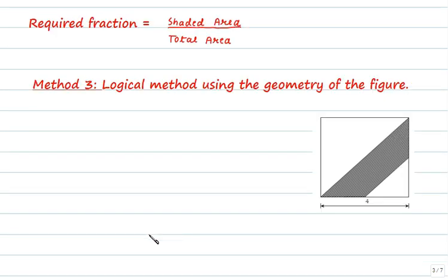Let us see another method which uses only logical thinking and the geometry of the figure. As you know that a square is a perfectly symmetrical figure so if we join the midpoints of opposite vertices then figure will get divided into smaller triangles and one smaller square.